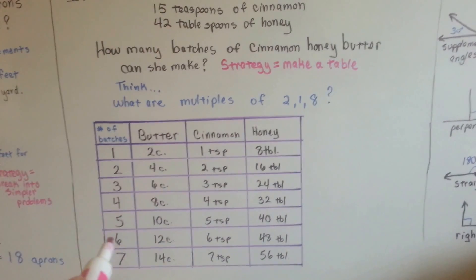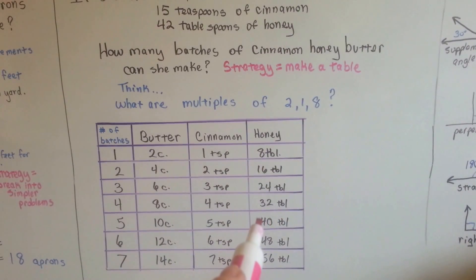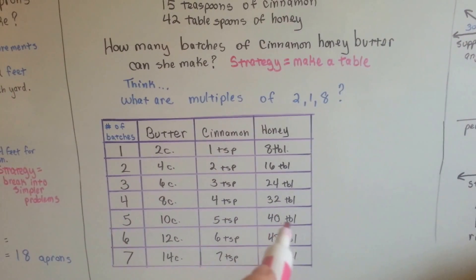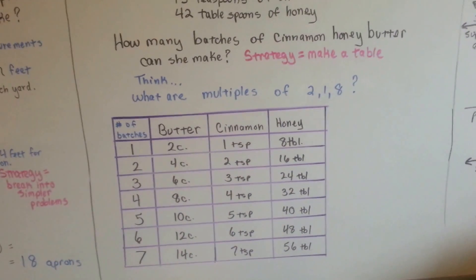So 6 isn't going to work. Now if we go back 1 to the 40 tablespoons of honey, that would work. And look, Emma could make 5 total batches. See? So see how the table helped us?